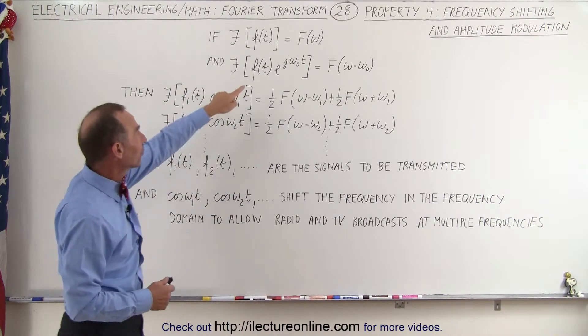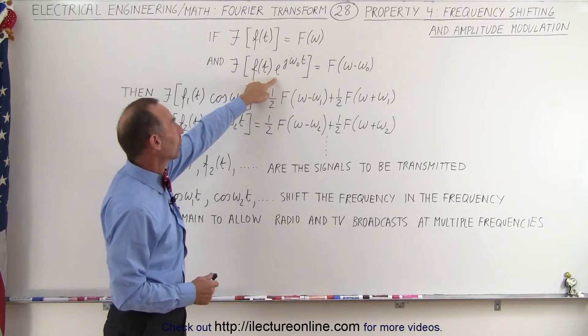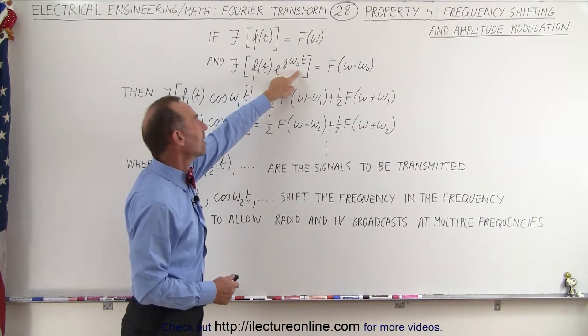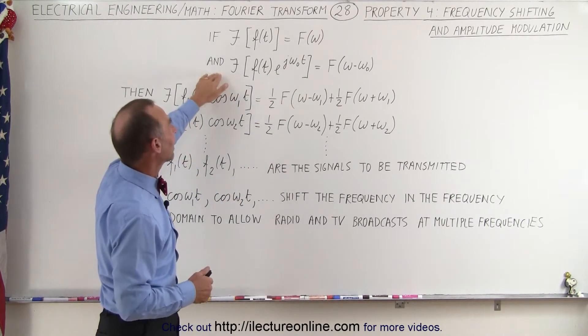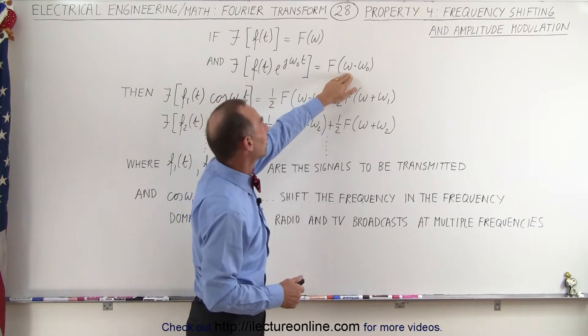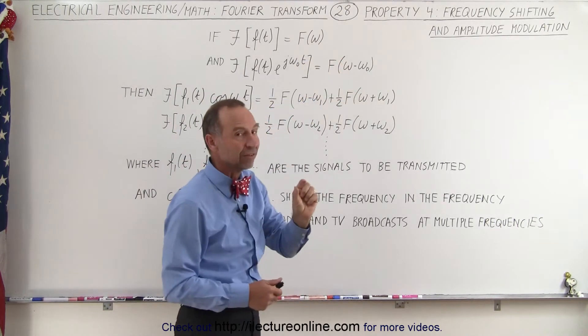And then if we take that very same function and multiply times e to the j omega naught t, omega naught being a fixed frequency, then that causes a shift in the frequency domain by the same amount.